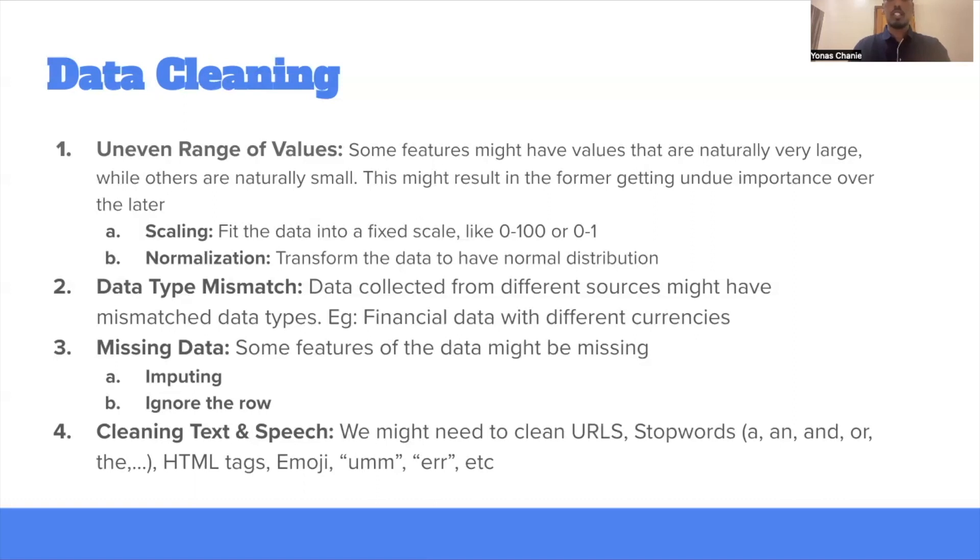To mitigate the uneven range of values, you can apply two techniques. The first one, scaling, and the second one, normalization. In scaling, we fit the data into a fixed scale, like between zero and one or zero to one hundred. And also in normalization, the data is transformed to have a normal distribution. Generally, normalization is preferred when our machine learning model expects the data to have a normal distribution. The second one is data type mismatch. Data type mismatch happens when the data is collected from different sources that might have mismatch data type. For example, a financial data might have different currencies. So it's important to handle mismatch like this.